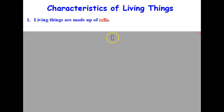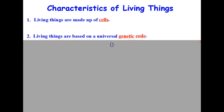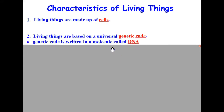Hopefully you enjoyed that little ditty. Our second characteristic all living things have in common is that living things are based on a universal genetic code. All organisms store information they need to live, grow, and reproduce in a genetic code written in a molecule called DNA. That information is copied and passed from parent to offspring. With only a few small differences, life's genetic code is almost the same in every living thing on Earth.